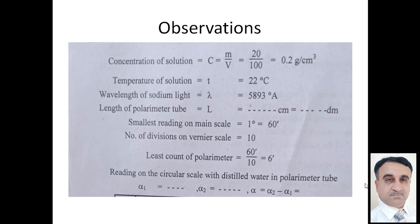Number of divisions on vernier scale and smallest reading on the main scale is here one degree, it is equal to 60 minute, and number of divisions on vernier scale equal to 10. By using these two values we can find least count of polarimeter that is equal to 60 minute by 10 is equal to 6 minute. Formula of least count is smallest reading on main scale divided by total number of divisions on vernier scale.